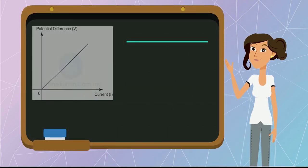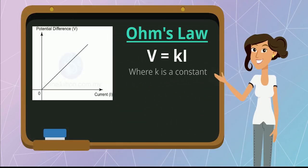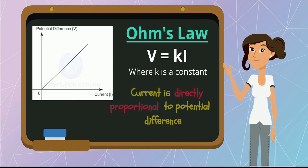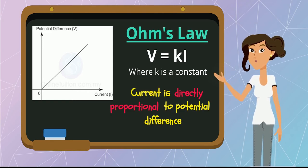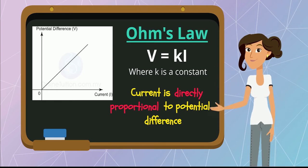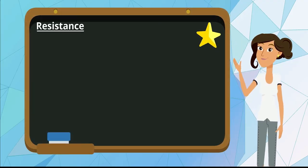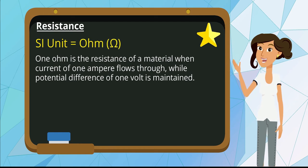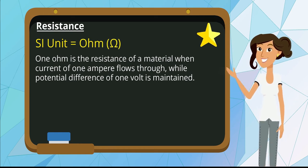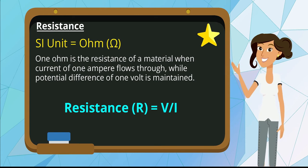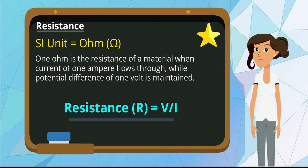Ohm's law states the current flowing in a metallic conductor is directly proportional to the potential difference applied across its ends, provided that the physical conditions, such as temperature, are constant. The SI unit of resistance is ohms. 1 ohm is the resistance of a material when a current of 1 ampere flows through it, while a potential difference of 1 volt is maintained.